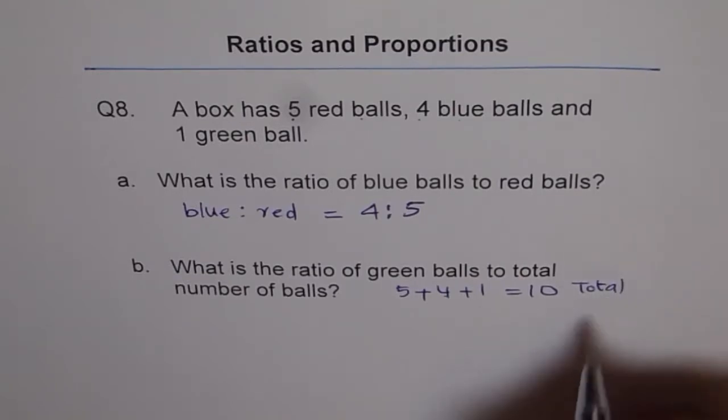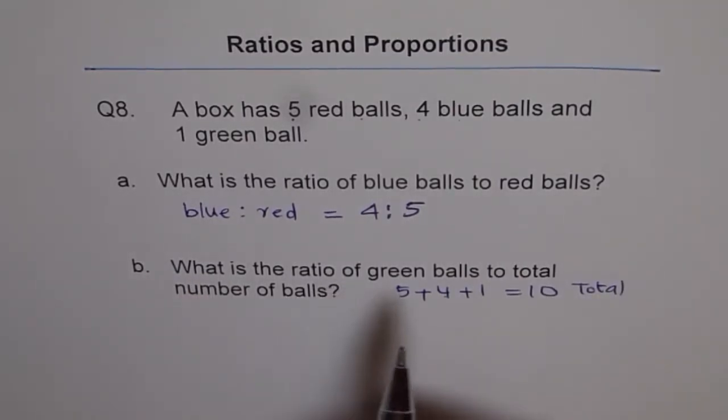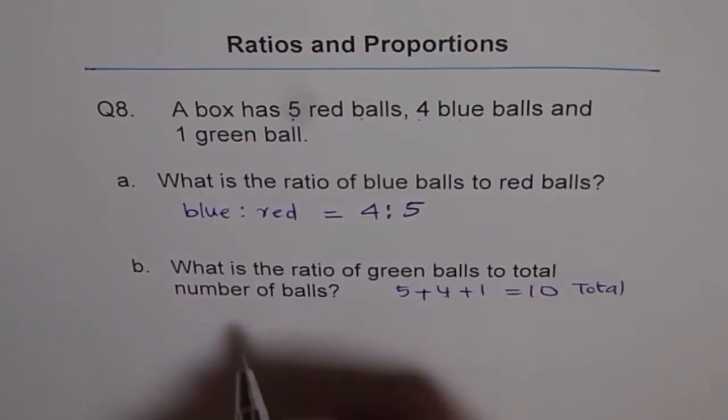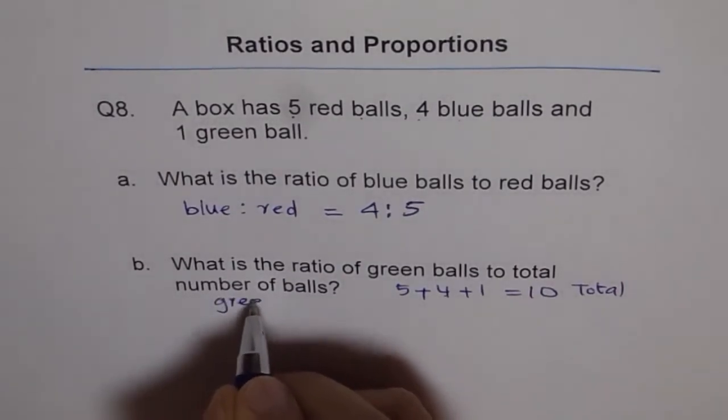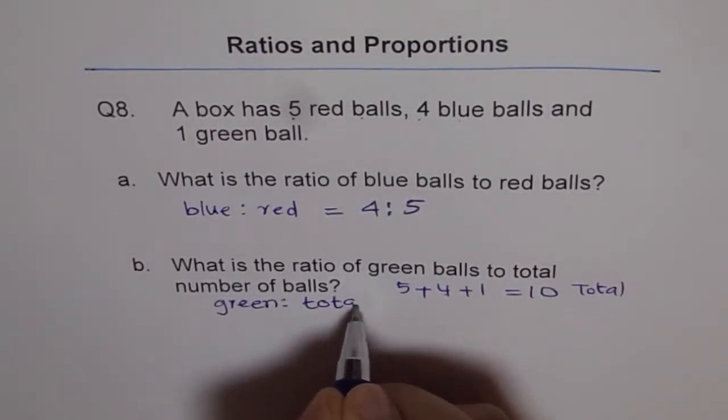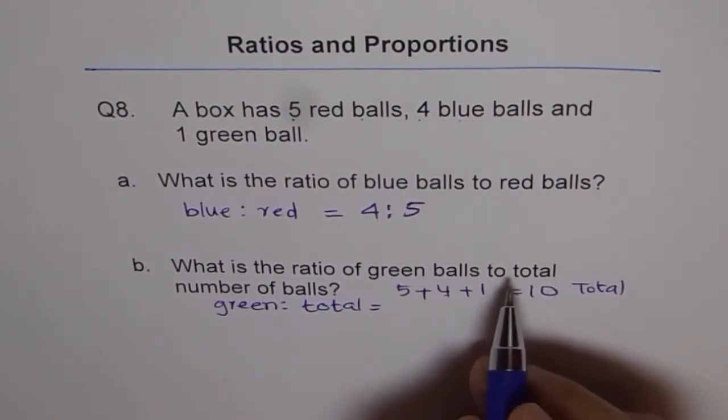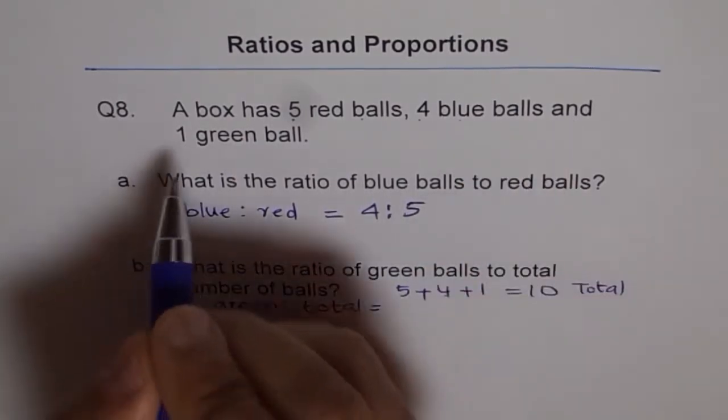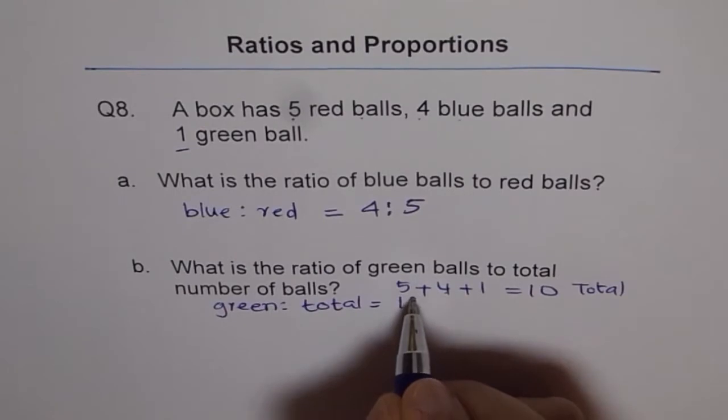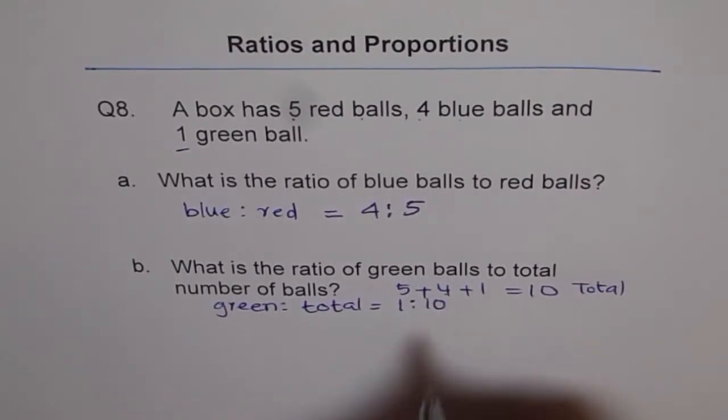So total number of balls is 10 for us. What is the ratio of green ball to total? So we will write green to total. Is equal to, number of green balls is only 1. 1 green ball. So we get 1 is to 10. So that is our answer.